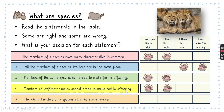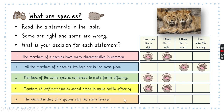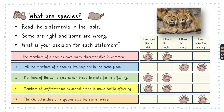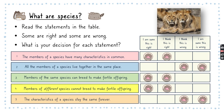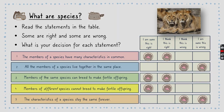Lastly, statement five: the characteristics of a species stay the same forever. If you chose 'this is wrong' then you are correct. The characteristics of a species don't always stay the same forever — there are species that evolve, developing characteristics that are much more different than what they used to have.